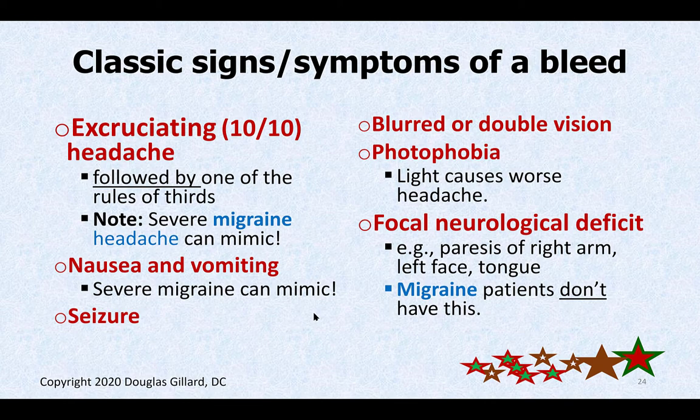Migraine can mimic a bleed presentation, but seizures are related to any type of bleed of the brain where blood rushes into the subarachnoid space. Double vision and photophobia can occur — migraine can cause those too. People who are having a stroke or a bleed may have paresthesias in their arms, tongue problems, and face problems. It all depends on what part of the brain has died. Migraine patients certainly don't have those neurological deficits.